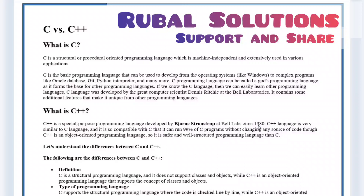C is the basic programming language that can be used to develop from operating systems like Windows to complex programs like Oracle Database, Git, Python Interpreter and many more. C programming language can be called a God's programming language as it forms the basis of other programming languages. If we know C language, then we can easily learn other programming languages. C language was developed by great computer scientist Dennis Ritchie at Bell Laboratories.